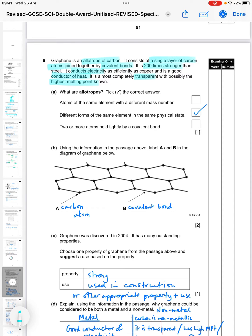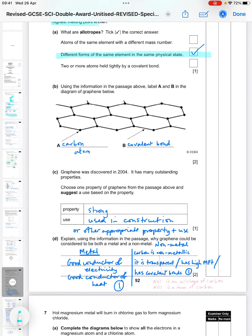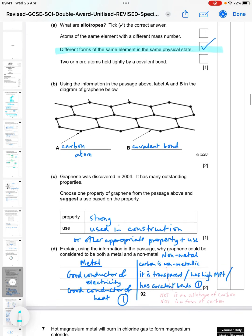So what are allotropes? You have three choices. Atoms of the same element, different mass number - those are isotopes. Different forms of the same element with the same physical state - that is correct. And two or more atoms held tightly by a covalent bond - that's just a covalent molecule. So it's the middle one there.